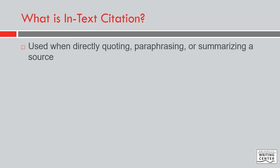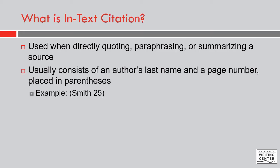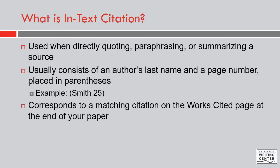An in-text citation, sometimes referred to as a parenthetical citation, is an important part of giving credit to a source which you have either paraphrased, summarized, or directly quoted in the body of your work. These are brief citations usually consisting of the last name of the author and a page number, which are placed in parentheses in the text. In-text citations correspond to matching sources on your works cited page, which is discussed in another video in this series.